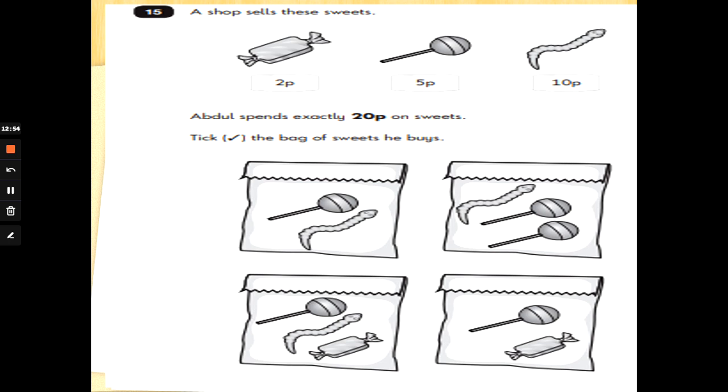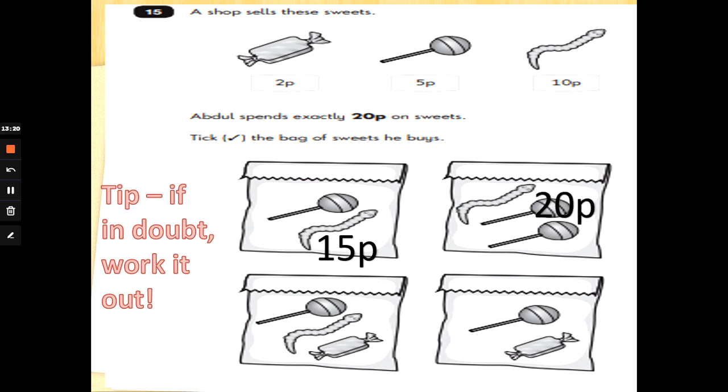Number 15. A shop sells these sweets. The sweet is worth 2 pence. The lolly is worth 5 pence. The worm is worth 10 pence. Abdul spends exactly 20p on sweets. Tick the bag of sweets he buys. What I would do here is a little bit of code breaking. I would work out the answers and just write them in. Just take a little bit of time to work it out. So, a lolly is 5. 5 add a worm is 15p. If in doubt, work it out. So, that one's 15p. Then we've got a worm and two lollies. So, a worm is 10p. And a 5 add 5 is 20p. Can you see that I've worked them out. And now I know for definite, which one has 20 pence inside it.